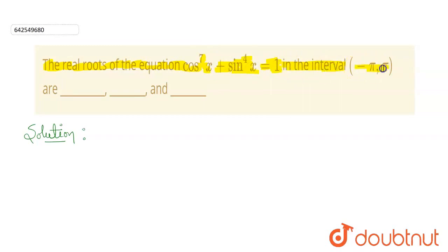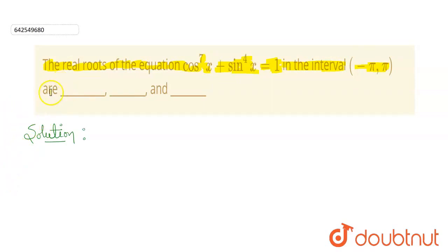The interval is minus pi to pi. We have to find the real roots of the given equation. It is given that there will be 3 real roots in this interval, that is minus pi to pi.